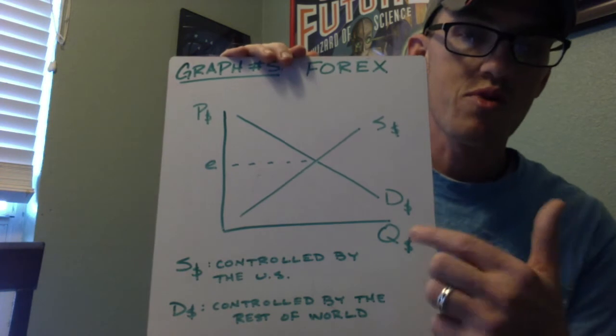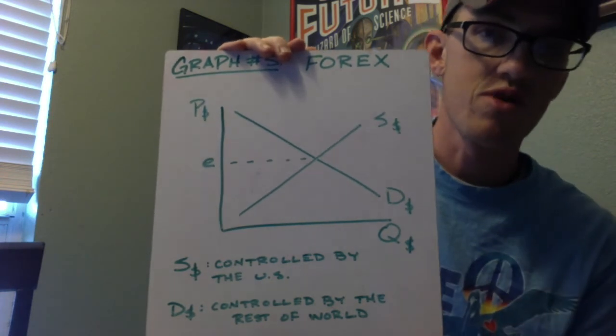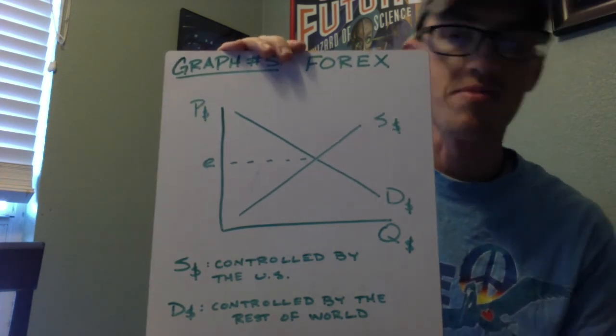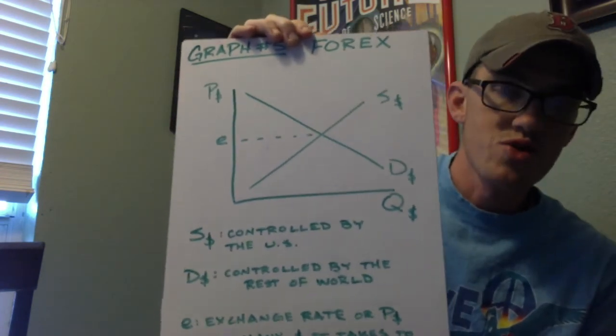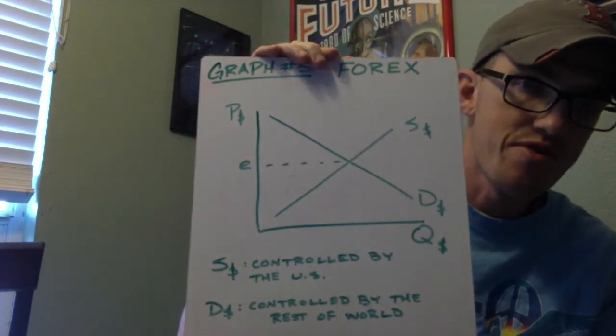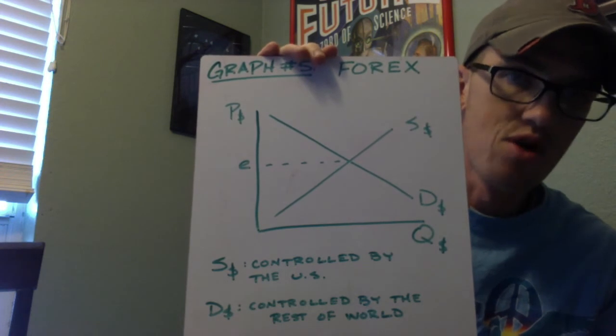Where they intersect, we call the exchange rate. We use the symbol E for exchange rate. Very simply, how to remember what controls what line, because that's probably the hardest part of this graph, is what line do I move?